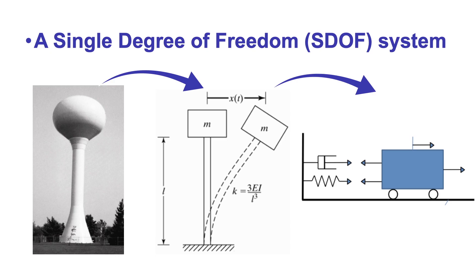Obviously, most real structures will have many, even an infinite number of degrees of freedom, but a surprisingly large number of them can be modeled as a single degree of freedom system. In fact, single degree of freedom idealizations lay at the heart of most seismic design codes, such as Eurocode 8.